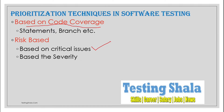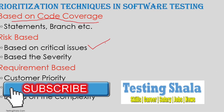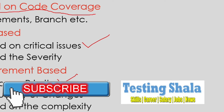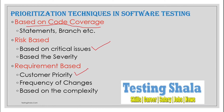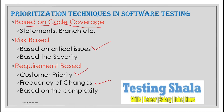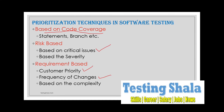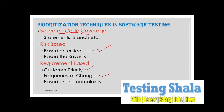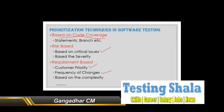The third prioritization technique is requirement-based. If a customer says a particular requirement is critical and needs to be fixed, we should address it on high priority. We should also consider how frequently a given requirement is changing — if it changes very frequently, we can keep those test cases in a separate backlog.